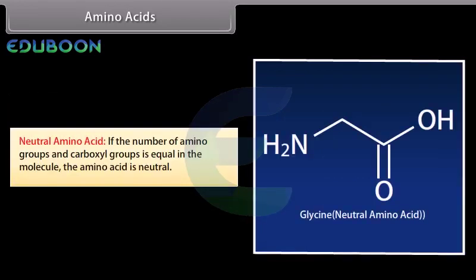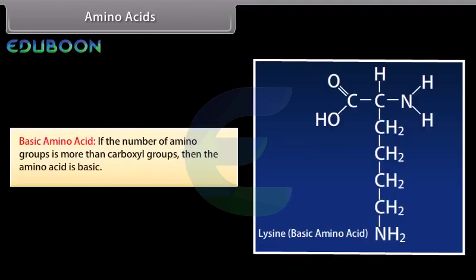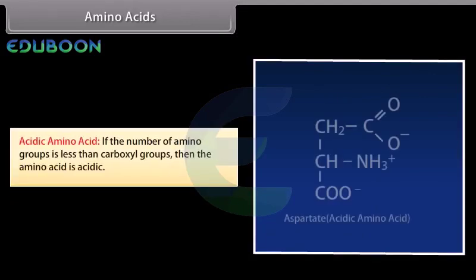Neutral amino acid: if the number of amino groups and carboxyl groups is equal in the molecule, the amino acid is neutral. For example, glycine. Basic amino acid: if the number of amino groups is more than carboxyl groups, then the amino acid is basic. For example, lysine. Acidic amino acid: if the number of amino groups is less than carboxyl groups, then the amino acid is acidic. For example, aspartate.